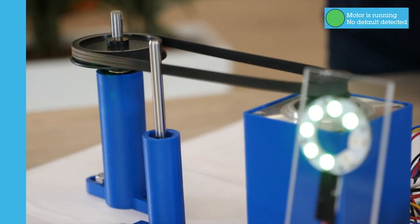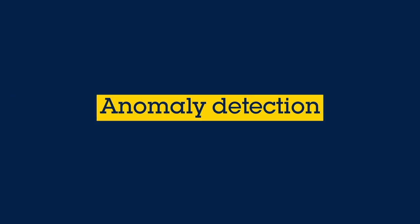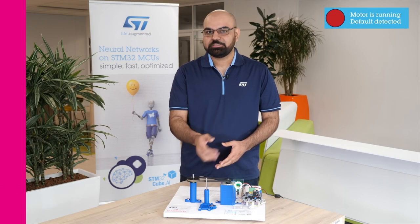The demo you are seeing performs at 98% accuracy with 84% confidence. Let us now simulate an anomaly by adding friction to the driving belt.